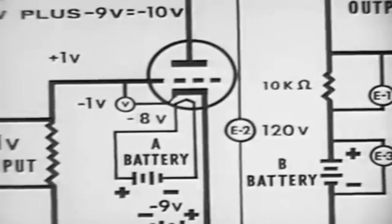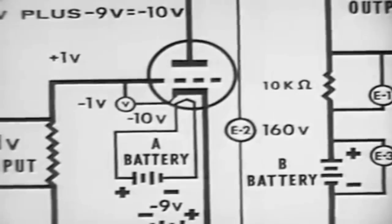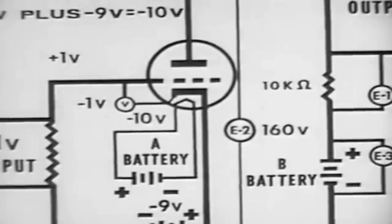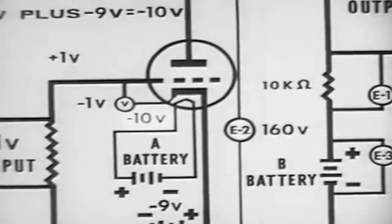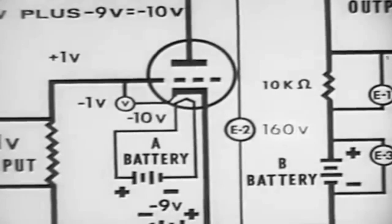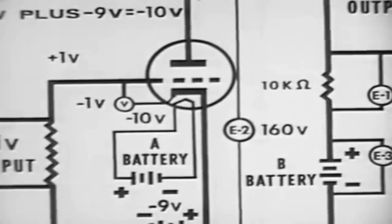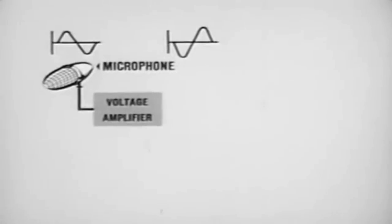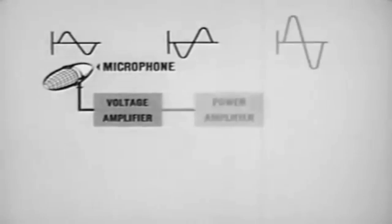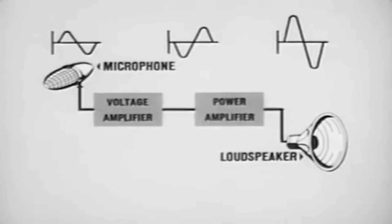Comparing the voltage change between the grid and the cathode to the voltage change between the plate and cathode, we find that there is a 2 volt change in the grid circuit and a 40 volt change in the plate circuit. We have thus amplified the signal voltage 20 times. This amplified voltage is applied either to another stage of amplification, a loudspeaker, or some other device which uses the amplified output.